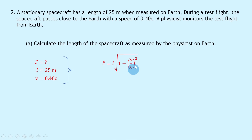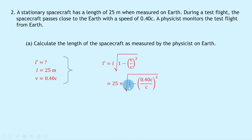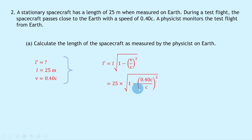We know the proper length l is 25 meters and v = 0.4c. Writing down our length contraction equation: l' = l times the square root of (1 minus v over c squared). Substituting gives 25 times the square root of (1 minus 0.4 squared). The c's cancel within the bracket, so putting 0.4 squared into the calculator, doing 1 minus that, taking the square root, and then multiplying by 25 gives 22.9 meters.